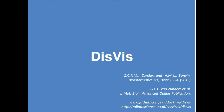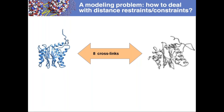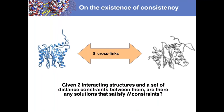DisVis arose from a case where two structures had cross-links available from mass spectrometry, defining distances between residues. The question was: are these cross-links actually consistent? Are there any configurations of the complex where these cross-links are satisfied? Given two interacting structures and a set of distance constraints between them, are there any solutions that satisfy all constraints, or in general N constraints?